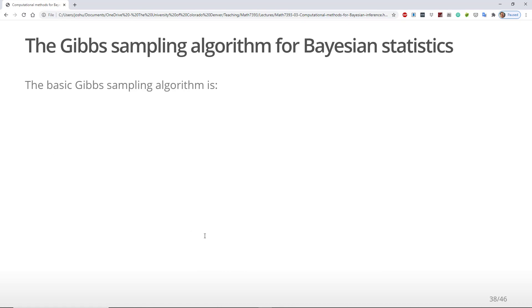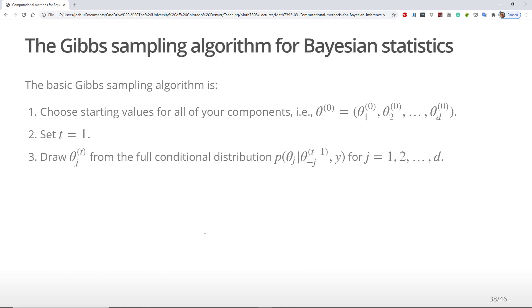Let's look at the basic algorithm for the Gibbs sampler. First, choose a vector of starting values for theta. These need to be in the support of the parameters. Next, set the time step t to equal 1. Next, for each component j from 1 to d, draw from each full conditional distribution. Once you've completed a cycle, increment t.